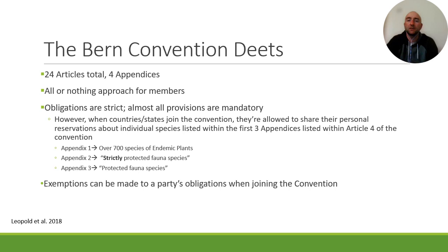The Bern Convention has 24 articles total — basically rules for member states to follow — and four appendices. The member states take an all-or-nothing approach when joining. Obligations are usually pretty strict, and provisions are usually mandatory, unless before a country joins they can file what's called a reservation. Over 20 countries have made reservations, and they usually involve the listing of species under Appendix 2 or Appendix 3.